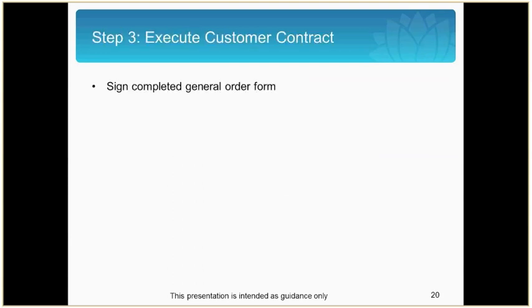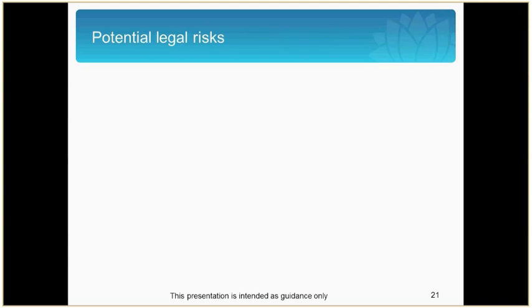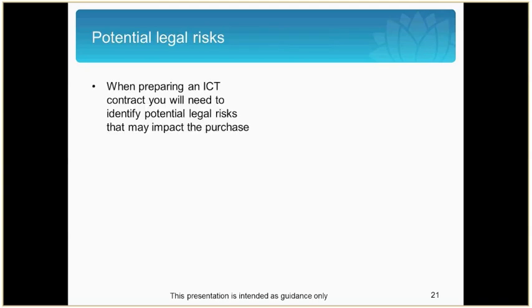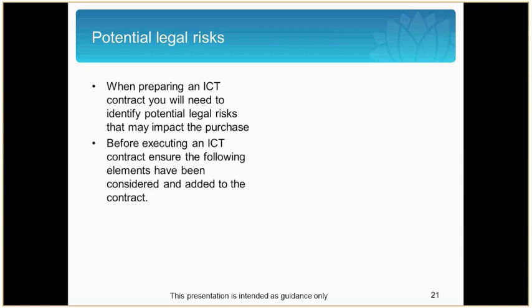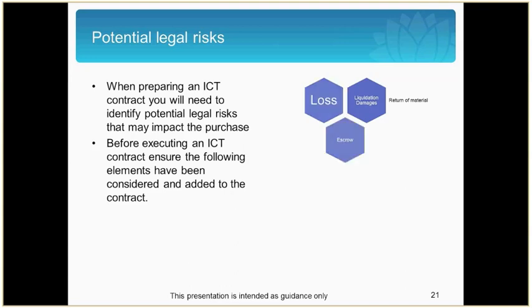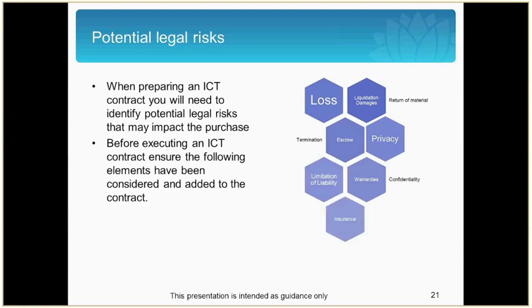The third step is to execute the customer contract. Both parties will need to sign the completed general order form. But before you do this, you need to make sure that you have considered all potential legal risks and that they have been evaluated and added to the contract. These risks include liquidated damages, return of material, loss in escrow, termination, privacy and warranties, confidentiality, limitation of liability and insurance, variations, intellectual property and securities, and indemnities.